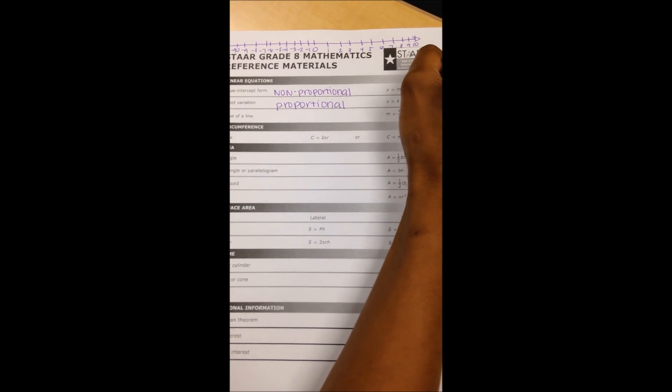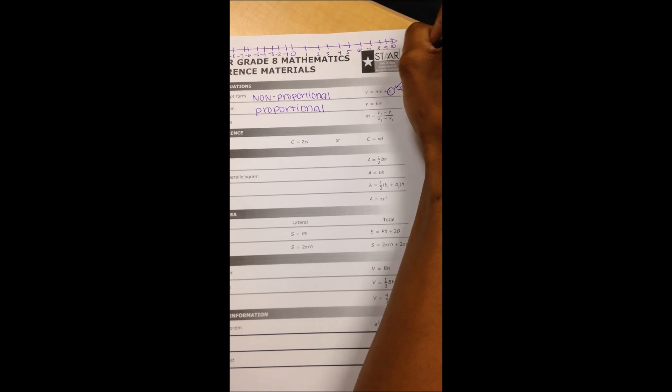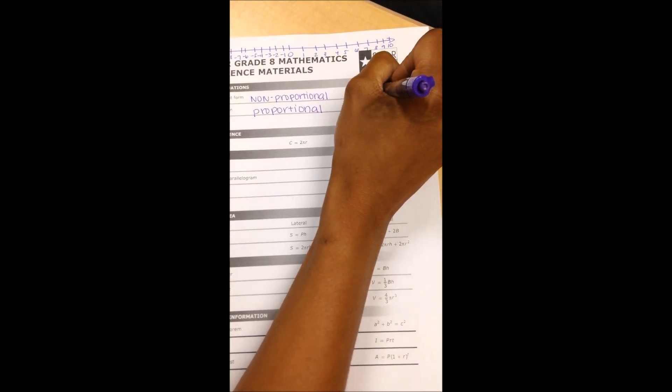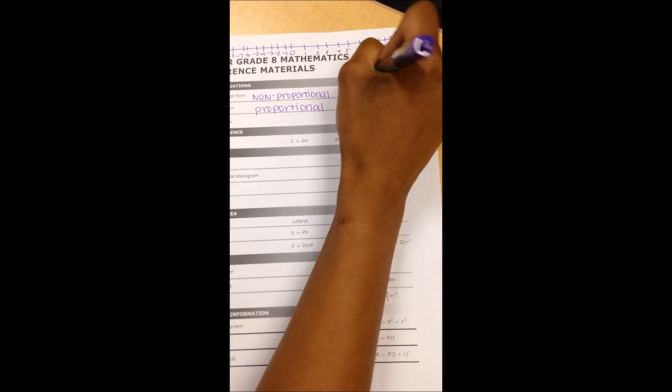Also circle your b, draw an arrow, label it y-intercept. Circle your m, draw an arrow, label it slope.